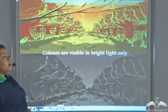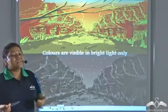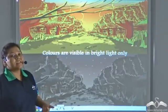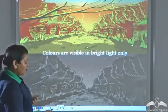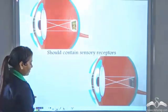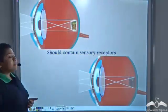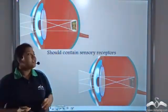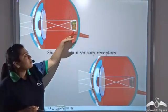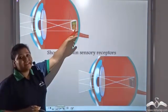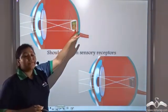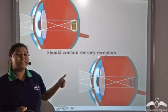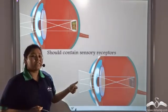But colours are visible only in bright light. Since the image is formed on the retina, the retina should contain sensory receptors for colours.